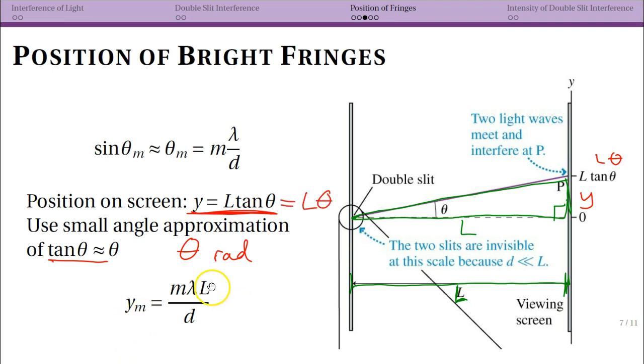To rewind a little bit, we've just taken this equation, we've multiplied L on both sides, we've recognized that L times theta, as long as that's in radians and we can use the small angle approximation, is equal to Y. Hence we get to say that Y is equal to m lambda L over d.